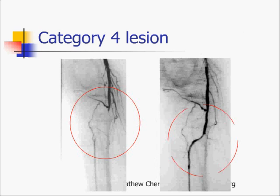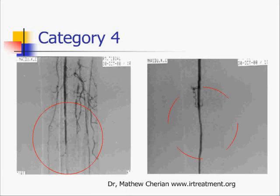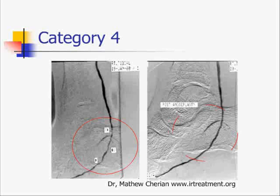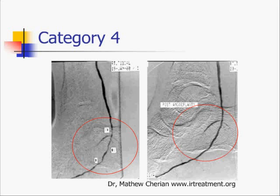Another category 4 lesion. Another category 4 lesion. And another category 4 where we have also had to treat the dorsal pedis. Another category 4 where the only vessel had a very critical stenosis of the posterior tibial at the level of the ankle.